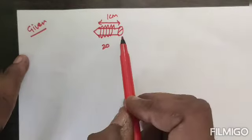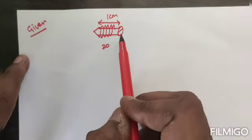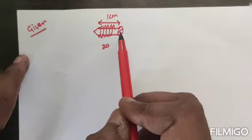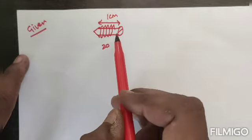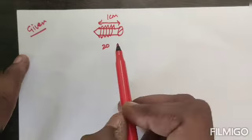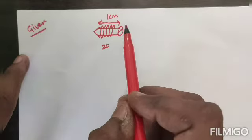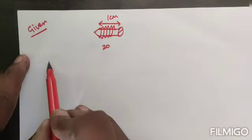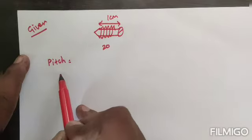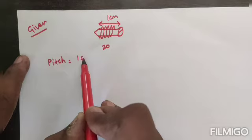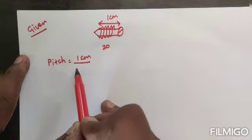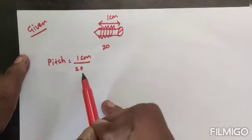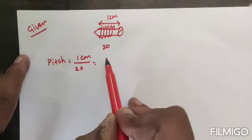In this situation we are going to find the pitch. So let us imagine this is like a screw present in the screw gauge. In the screw gauge structure, inside the pitch scale, one screw is there — you can imagine that. Now I can find the pitch value. The total length is one centimeter and the number of threads is 20, so pitch equals 1 divided by 20.